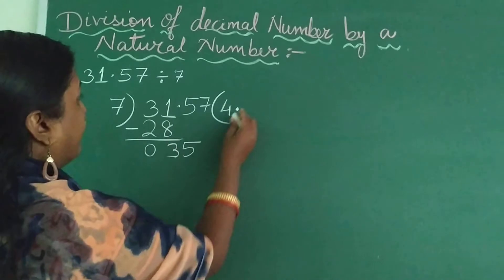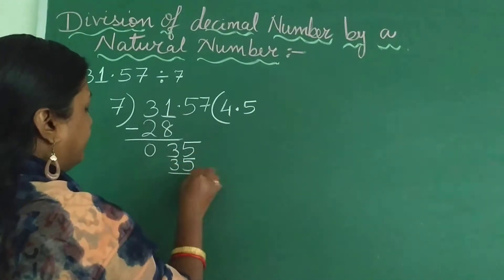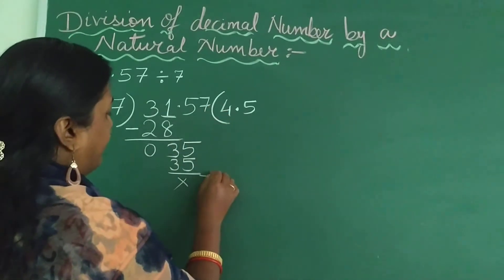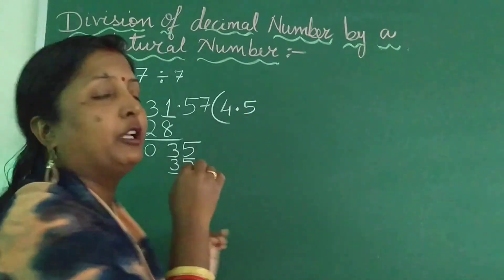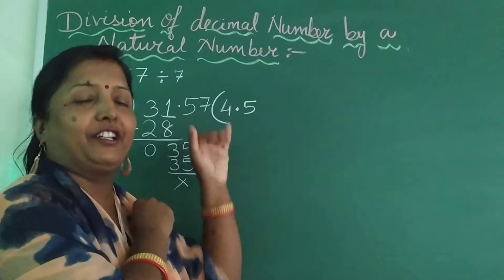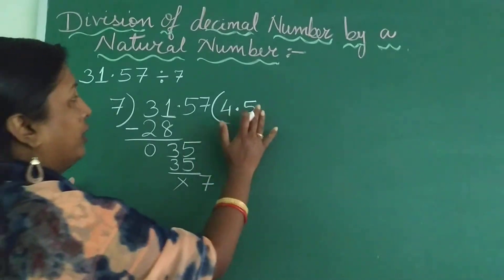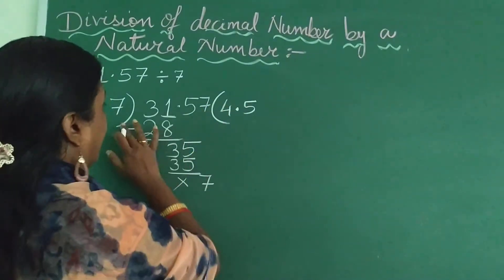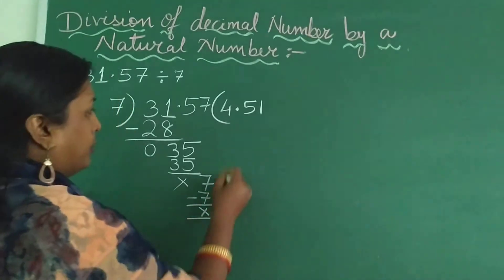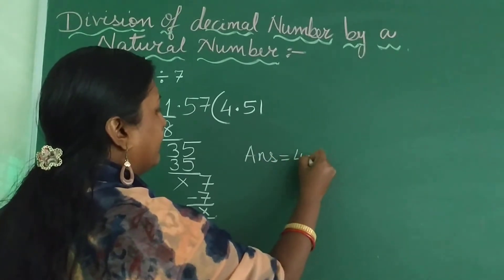So now, 7 times 5 is 35. You get a remainder of 0. You can put a cross in place of 0. Now the 7 comes down. Don't put a decimal point again here — the decimal point is already there. You don't put a decimal point after every decimal place; it is 1 decimal point in 1 number. So 7 ones are 7. Subtract again, remainder 0. So your answer is 4.51.